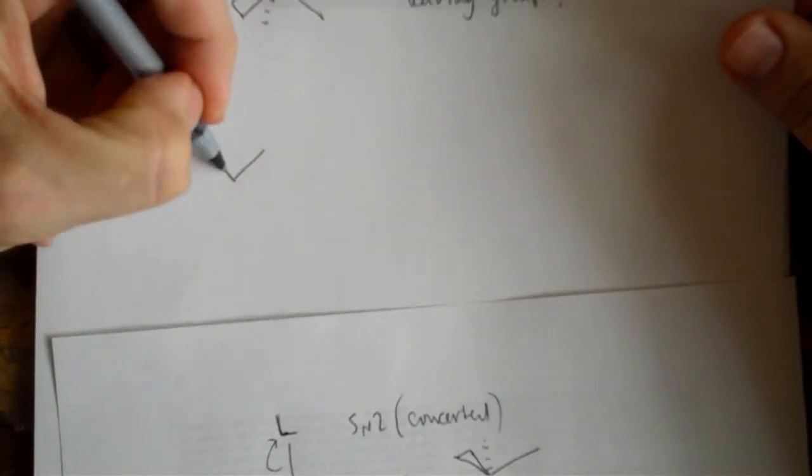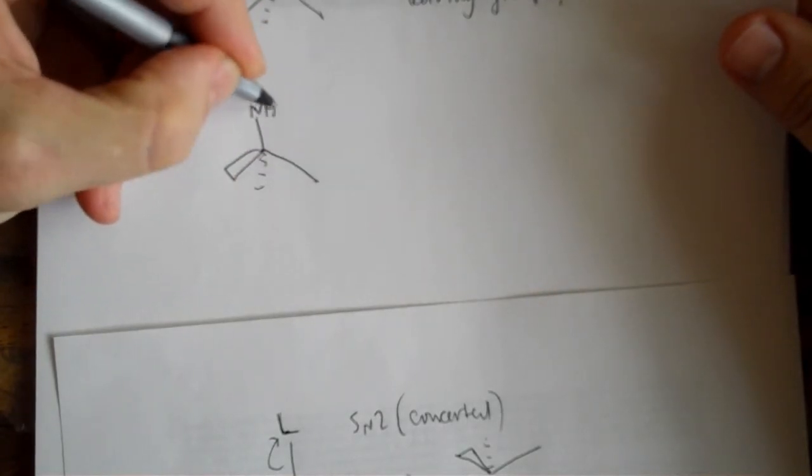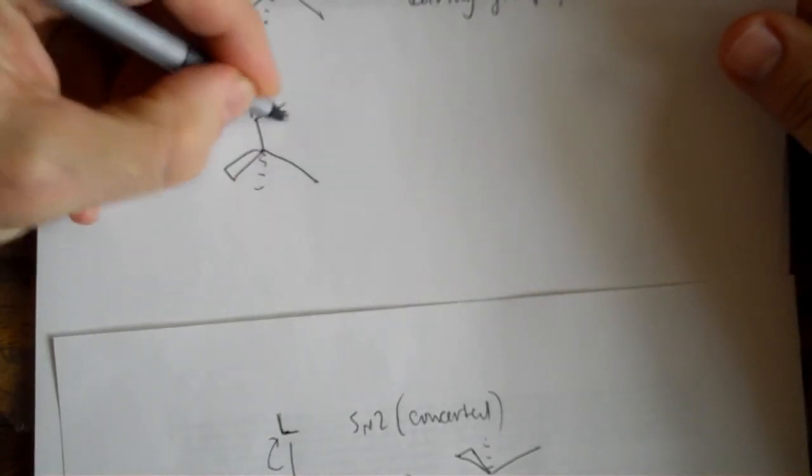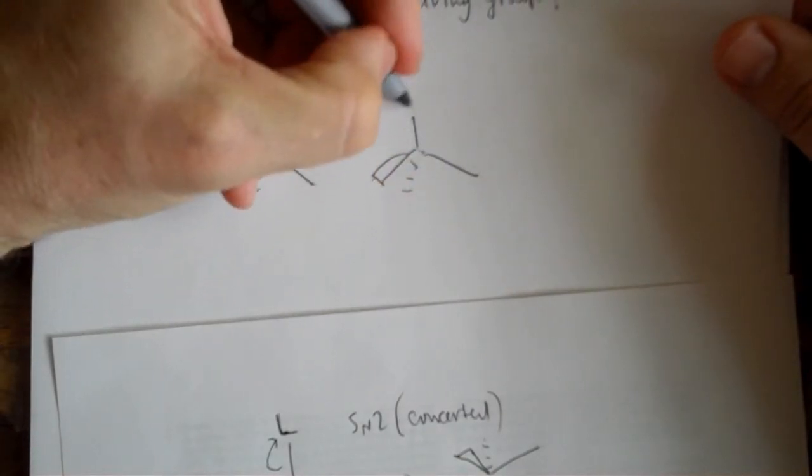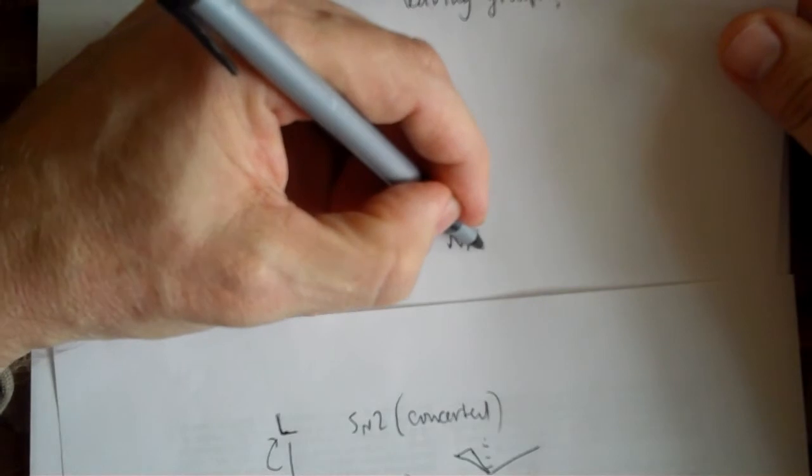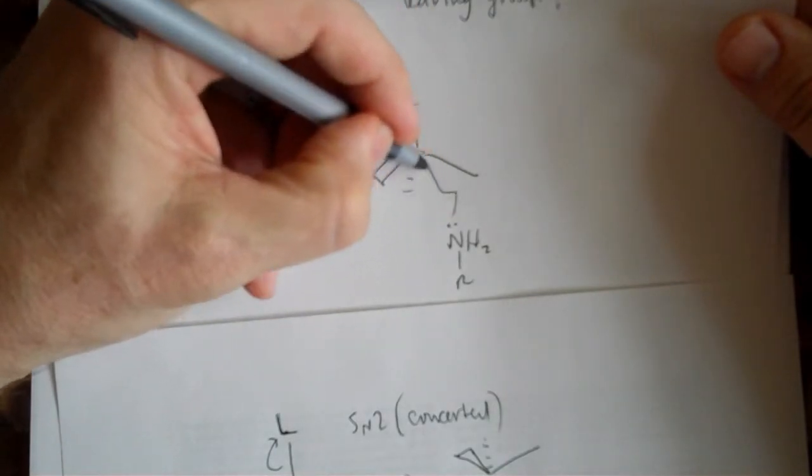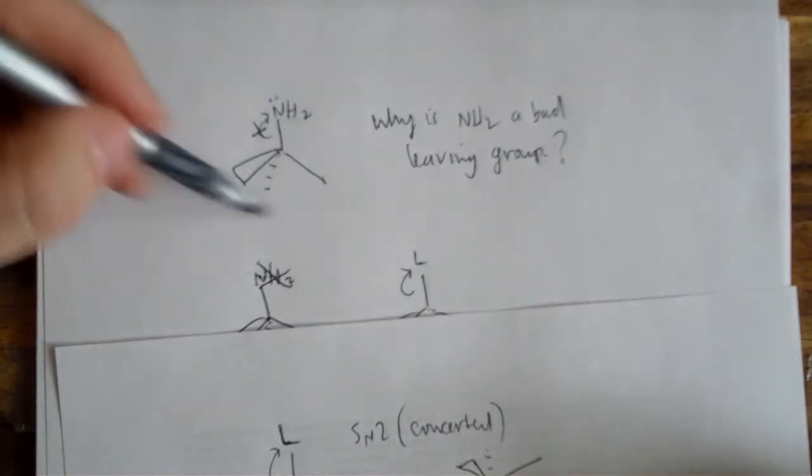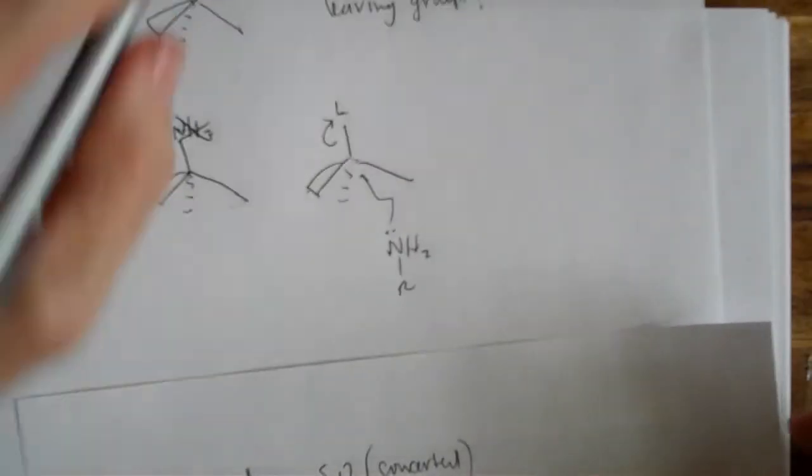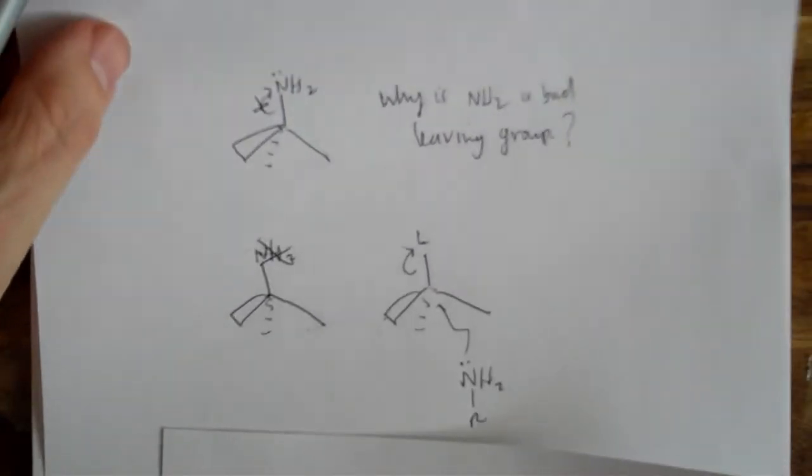But when she comes back and says that amines do undergo substitutions, what she means is that they can do that, right? So they're bad leaving groups, bad leaving groups, but they're not bad nucleophiles. So they really do undergo substitutions.